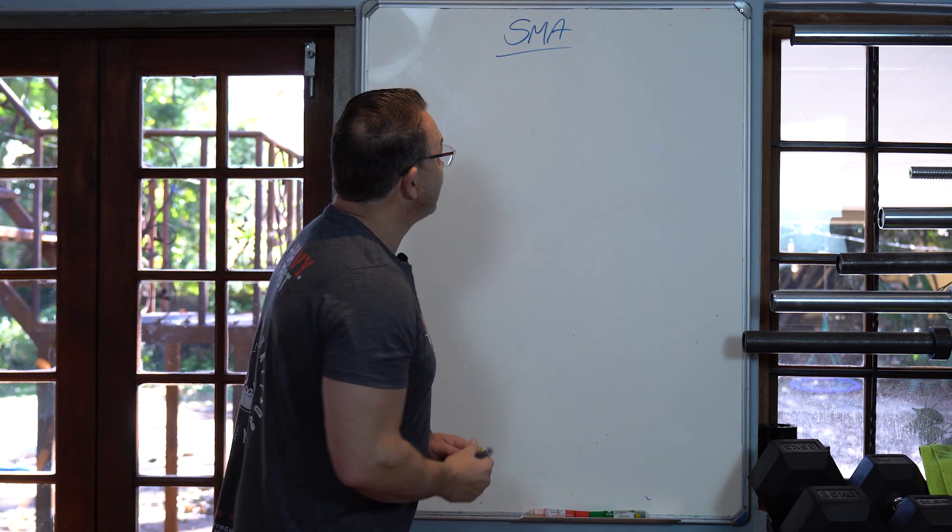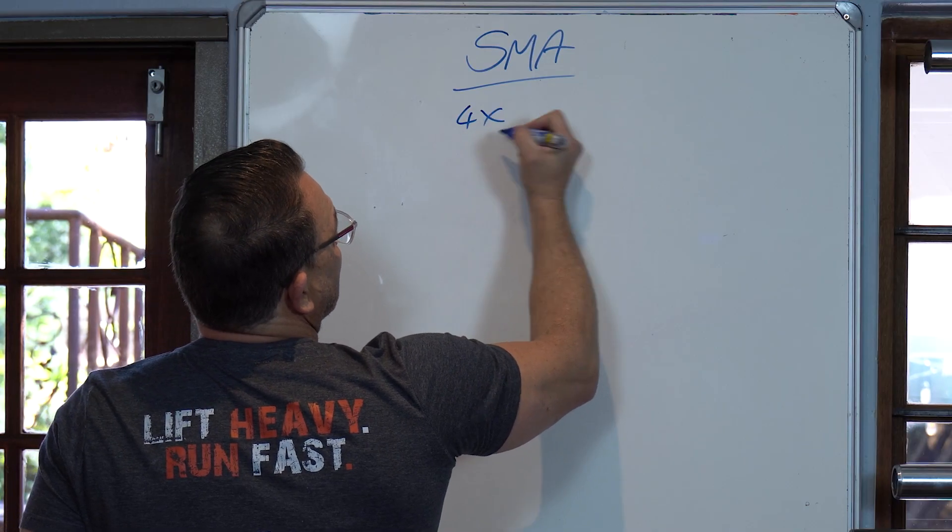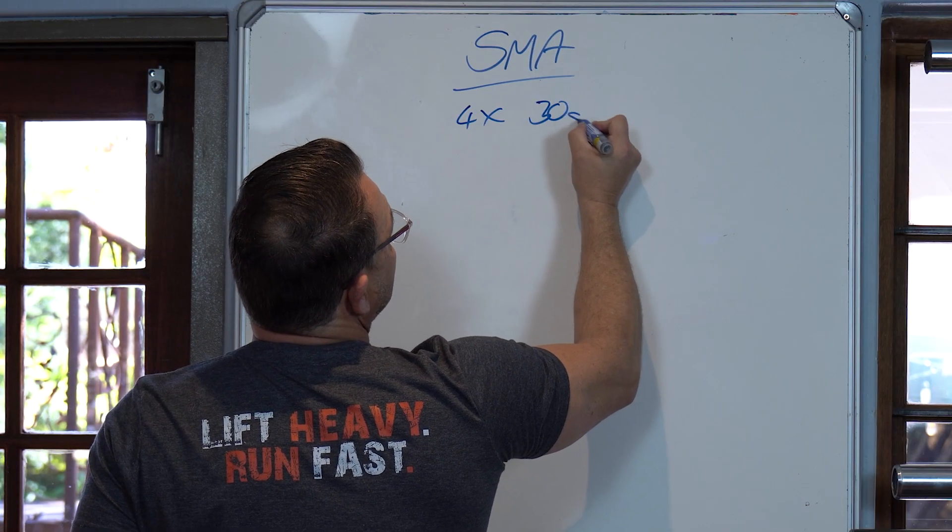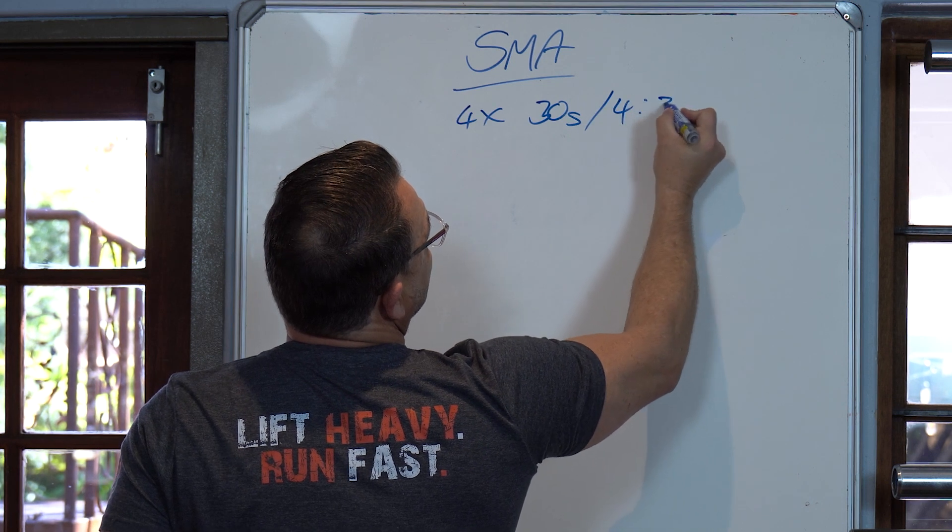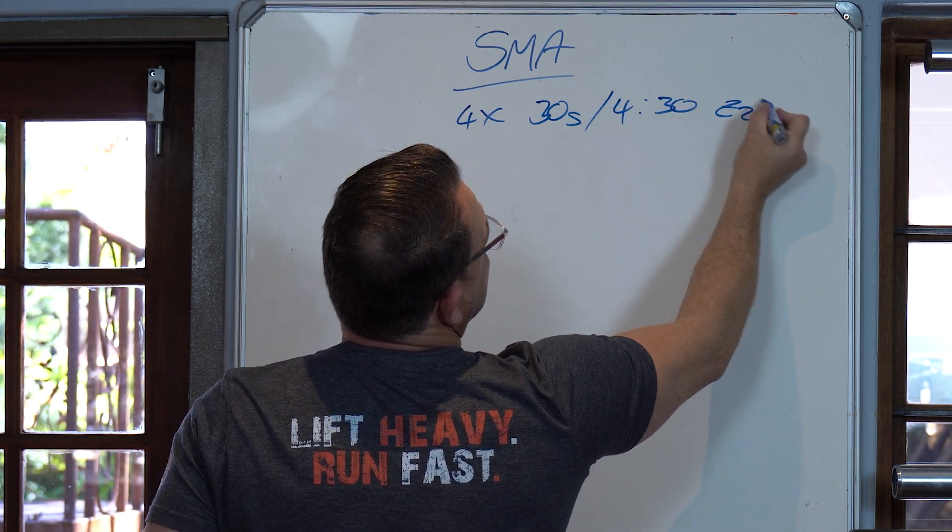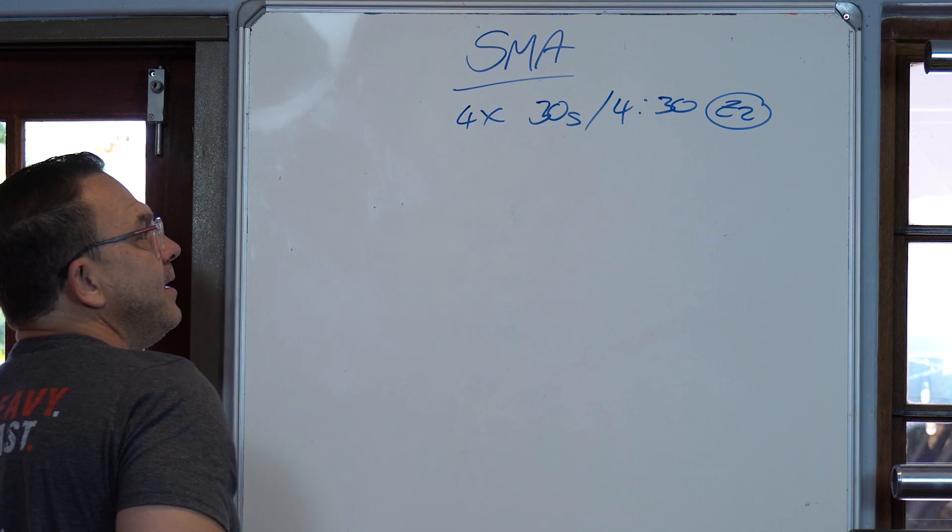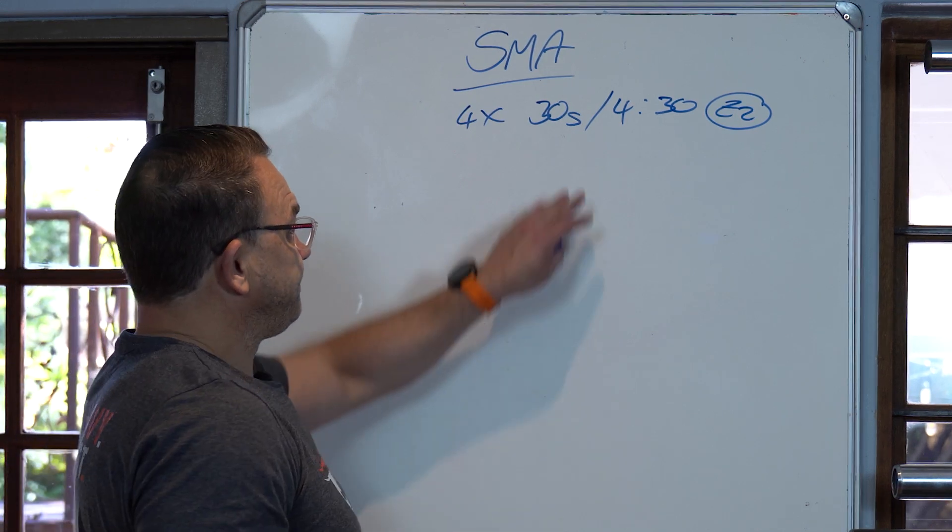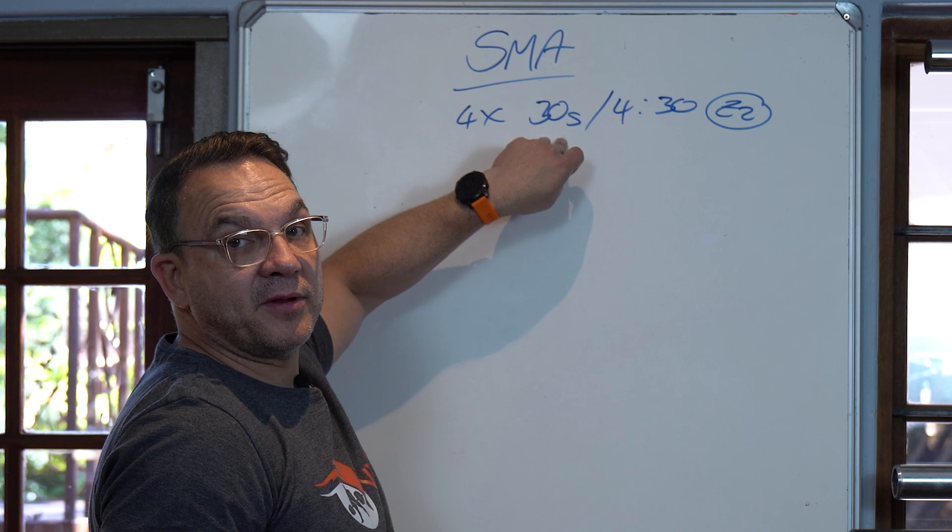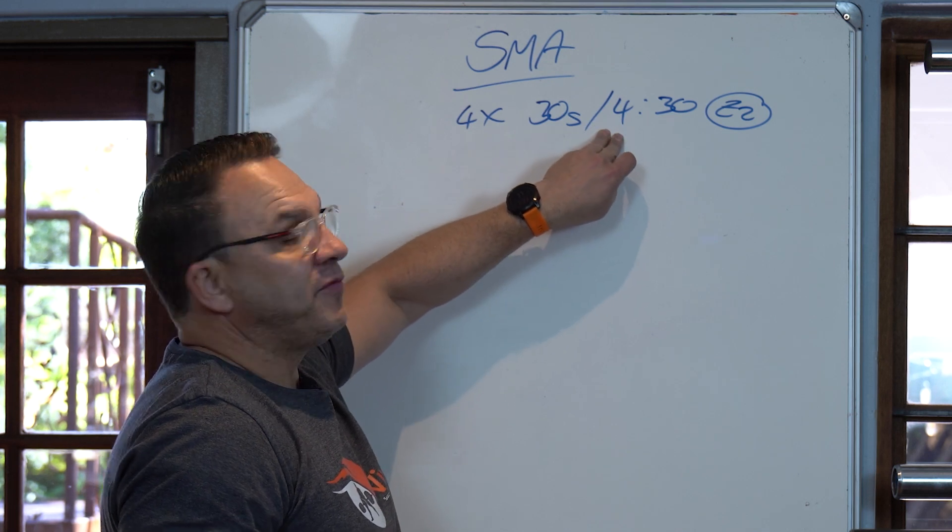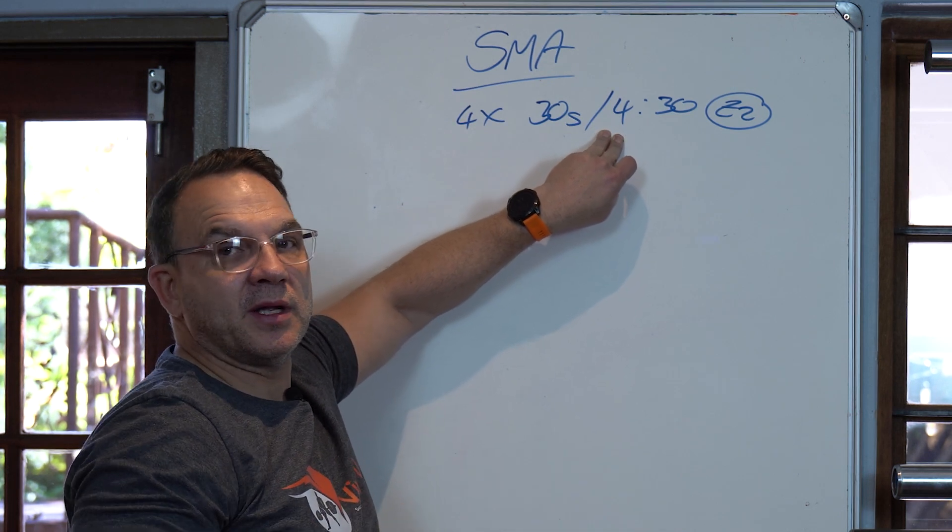How do we set up? It starts with four rounds of 30 seconds work and four and a half minutes zone two. So you're going to be on the salt bike, you're going to do a certain RPM for 30 seconds, and then for four and a half minutes you're just going to be sitting and riding.